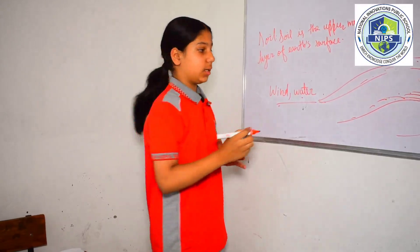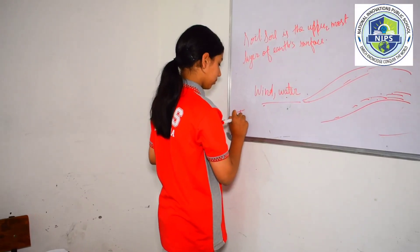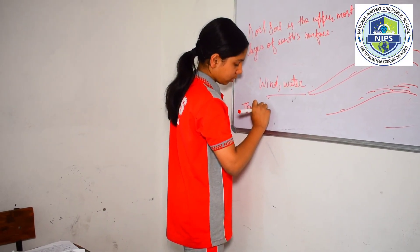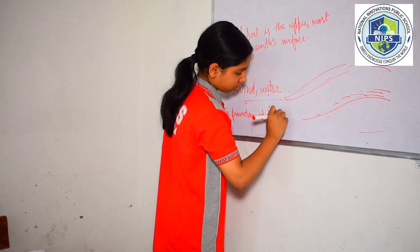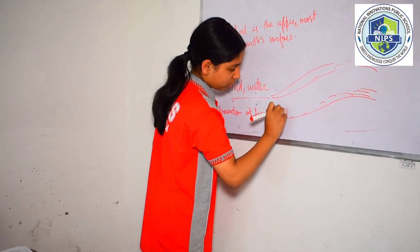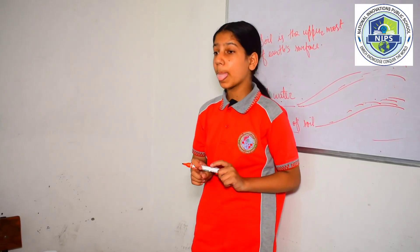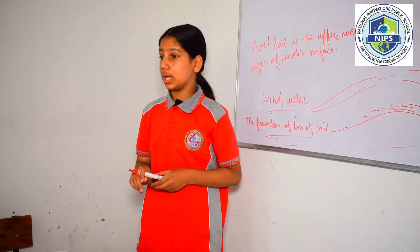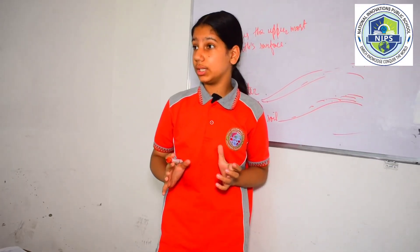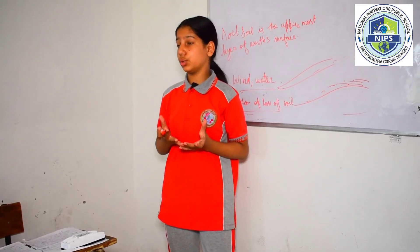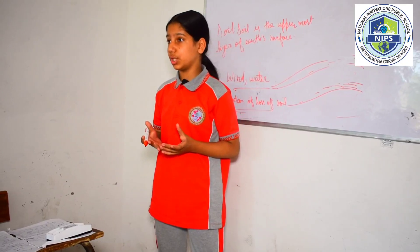What does soil conservation mean? Soil conservation means the prevention of loss of soil. There are many different ways of conserving soil. One of the best and common ways is to plant more and more trees. Crop rotation also reduces soil erosion. Controlling overgrazing of land by animals also reduces soil erosion.